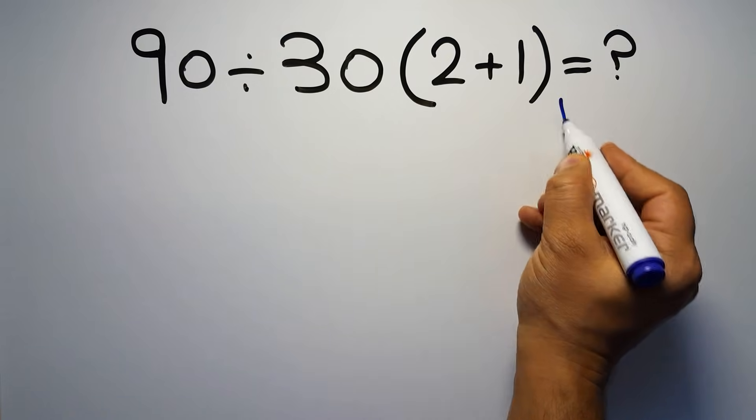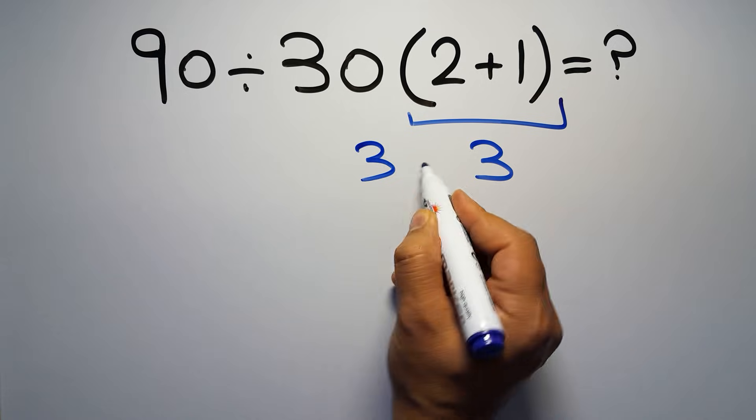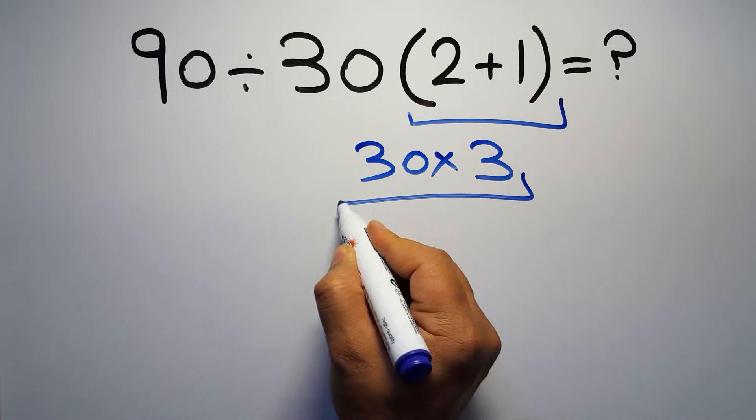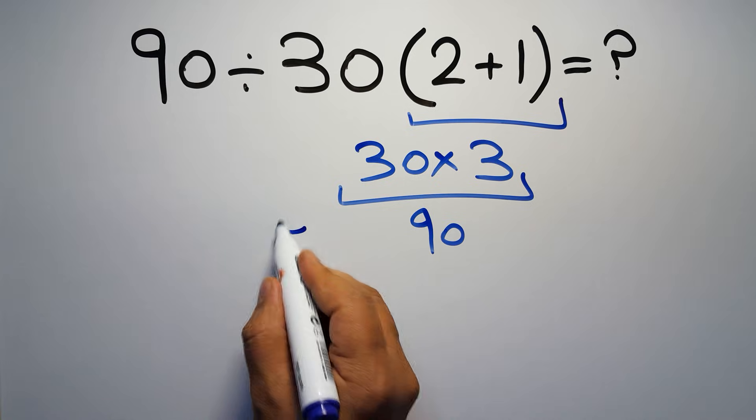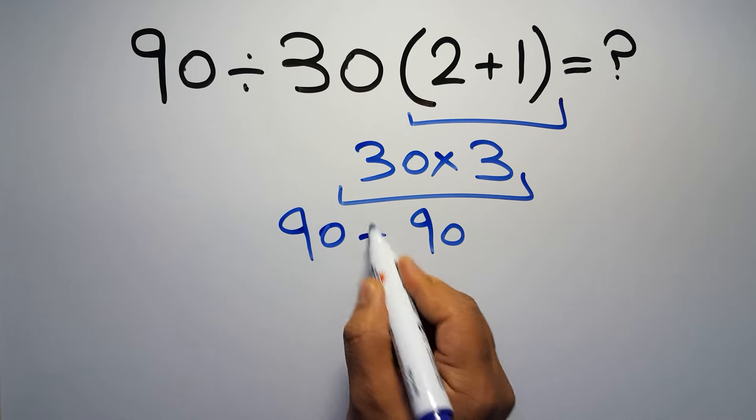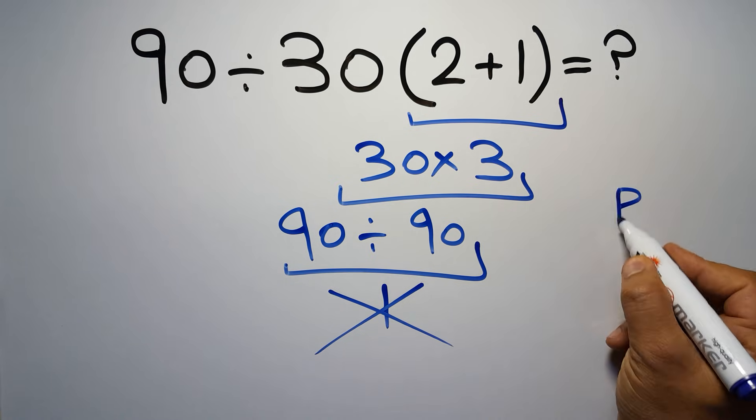2 plus 1 equals 3, and 30 times 3 gives us 90, so 90 divided by 90 is just 1. But this answer is not correct because according to the order of operations, first we have to do parentheses, then...